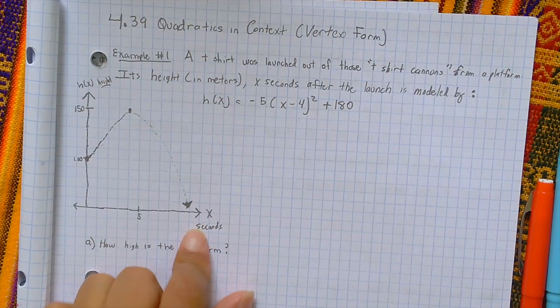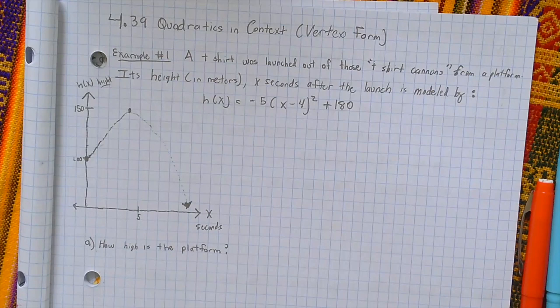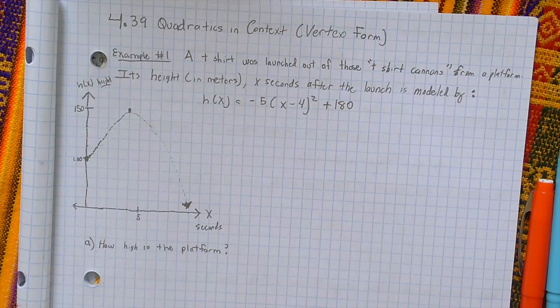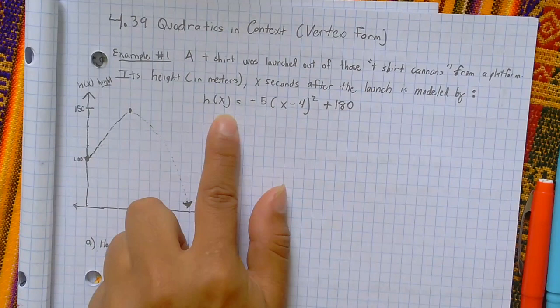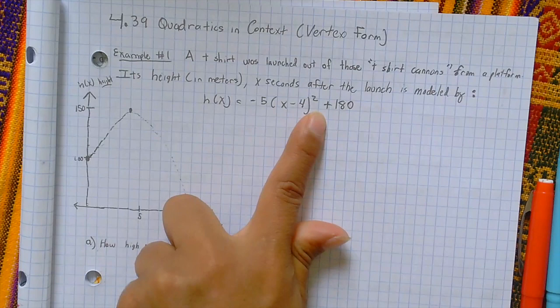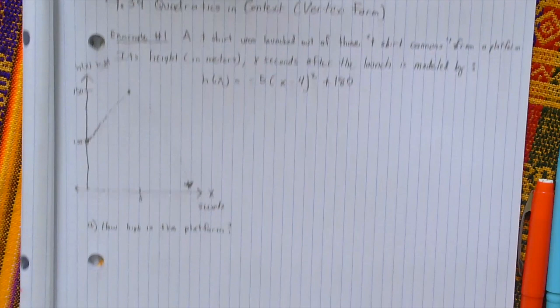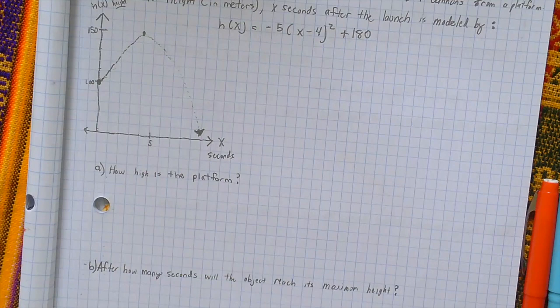So let's go with example 1 now. A t-shirt was launched out of those t-shirt cannons from a platform, right, you can see in a basketball game. Its height in meters, t seconds after launch, is modeled by the equation H(x) = -5(x - 4)² + 180. Alright, so, going into part A, how high is the platform?